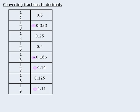Some of the decimals in the table feature squiggly symbols. These symbols indicate that a particular decimal is approximately equal to the corresponding fraction, but does not equal it exactly. For example, the decimal equivalent of 1 third is 0.33333... where the 3s repeat forever, so 0.333 is only the approximate equivalent of 1 third. On the GMAT, these approximations are all you need.